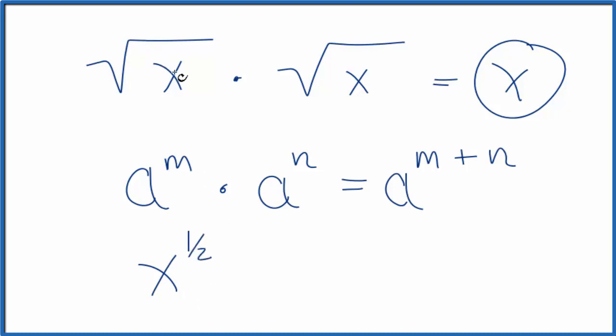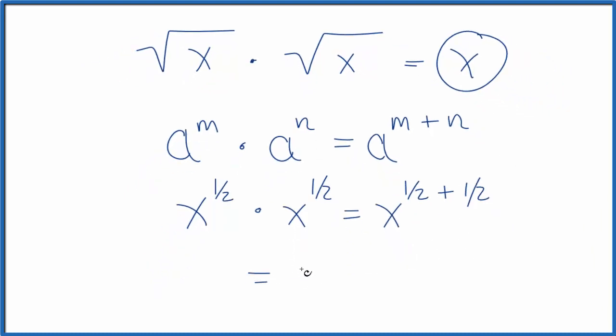Times x^(1/2), that equals x^(1/2 + 1/2). 1/2 plus 1/2 equals 1, so we get x^1, which just equals x. That's what we found the two previous ways we did this.